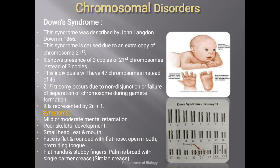Normally during gamete formation, each gamete contains 23 chromosomes, with one copy of chromosome 21 in the sperm and one in the ovum, giving the zygote two copies. However, in Down syndrome, during gamete formation, chromosome 21 fails to separate properly and passes as a whole into the gamete, leading to trisomy. As a result, instead of 46, the affected individual has 47 chromosomes.